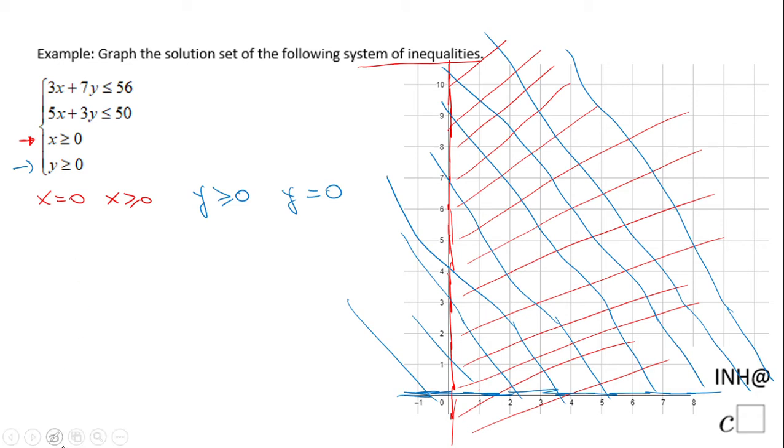Well, we have two more. We have the first one: 3x plus 7y less or equals 56. For graphing this I will solve for y. I'm gonna subtract 3x first and I will have 7y less or equals negative 3x plus 56. Then I'm gonna divide by 7 and the inequality becomes y less or equal negative 3 over 7x plus 56 divided by 7 is 8.